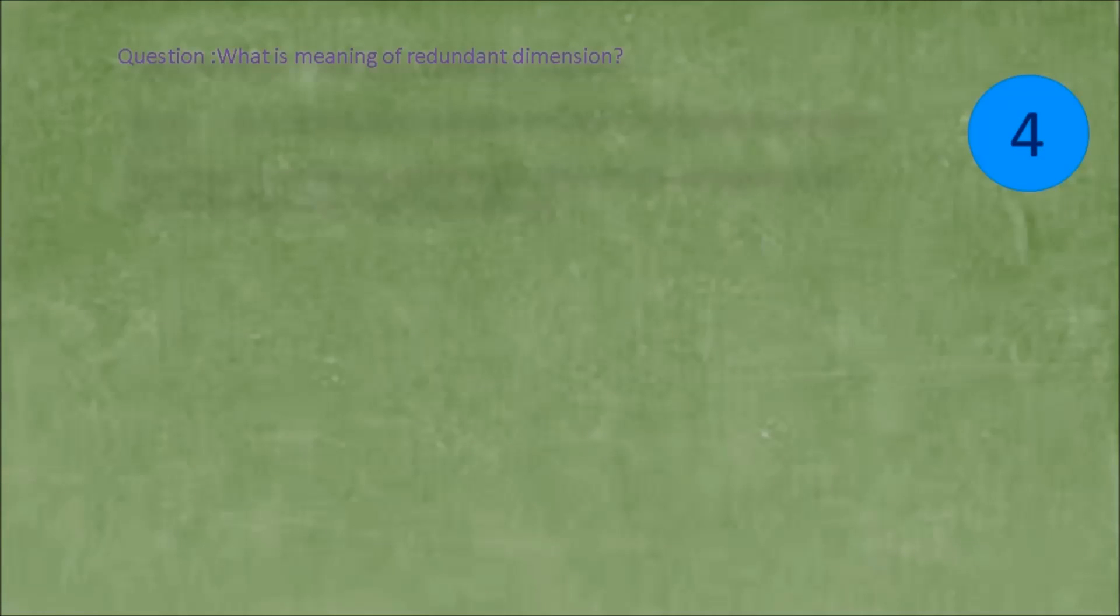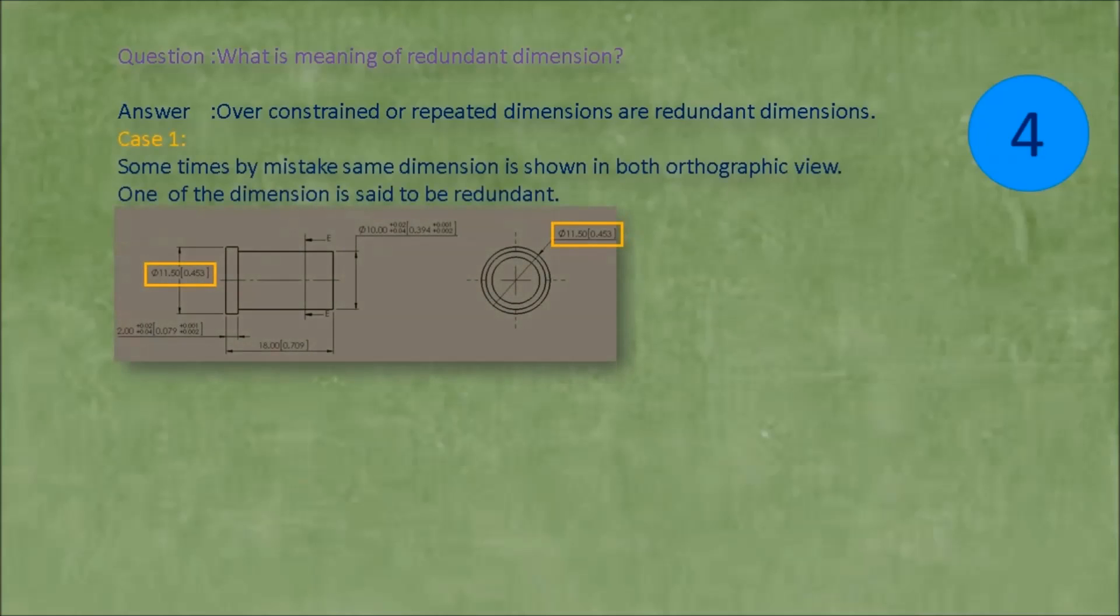Question: What is meaning of redundant dimension? Answer: Over-constrained or repeated dimensions are redundant dimensions. Case 1: Sometimes by mistake same dimension is shown in both orthographic view. One of the dimension is said to be redundant. Case 2: When length of two steps as well as total length is shown, one of the three dimension is redundant.